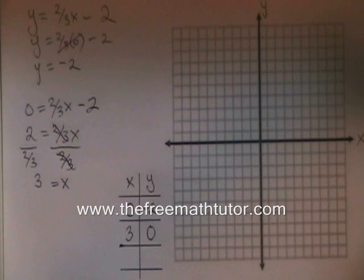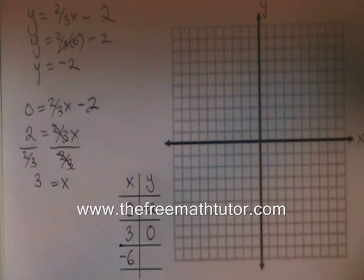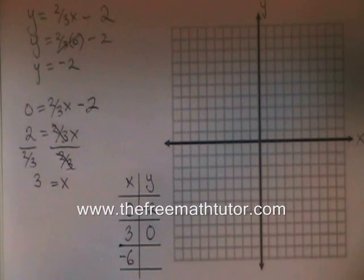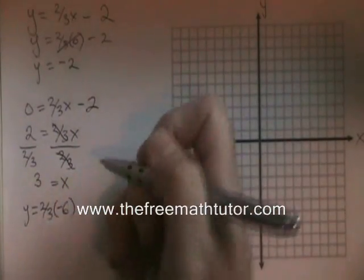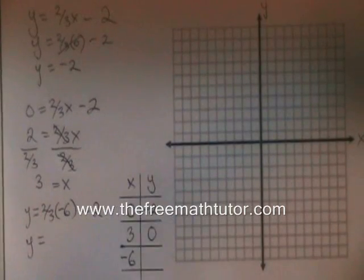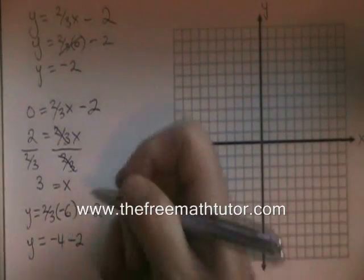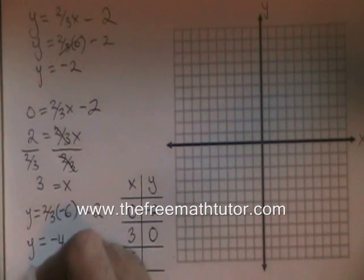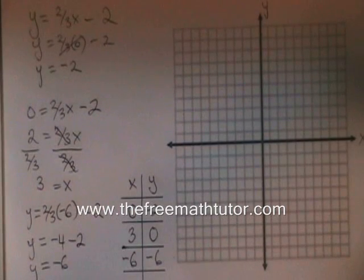Now we find a third point, and we can choose any number we want for either x or y. I'm going to try making x equal to negative six. If x equals negative six, the equation becomes y equals two-thirds times negative six minus two. Two-thirds times negative six is equal to negative four. So I have y equals negative four minus two, and y equals negative six. We have a third point, negative six, negative six.